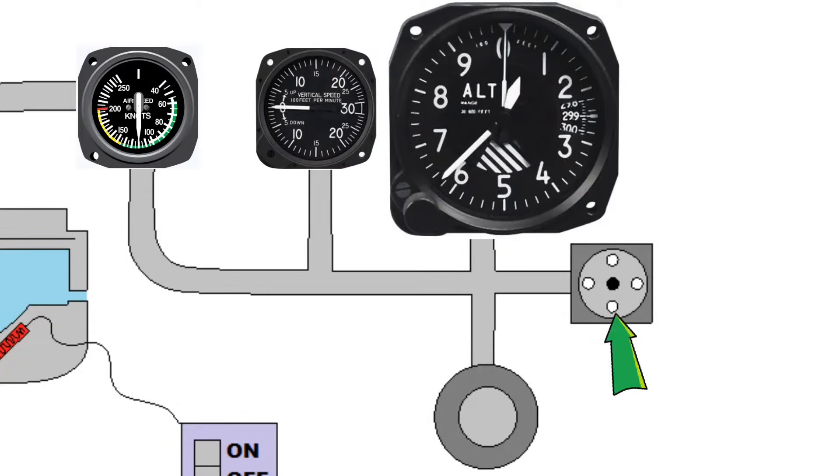Now, the altimeter uses the static port to sense the static pressure outside the aircraft. And because the static pressure changes one inch of mercury every thousand feet, the altimeter is able to give us an altitude reading because it senses that pressure.